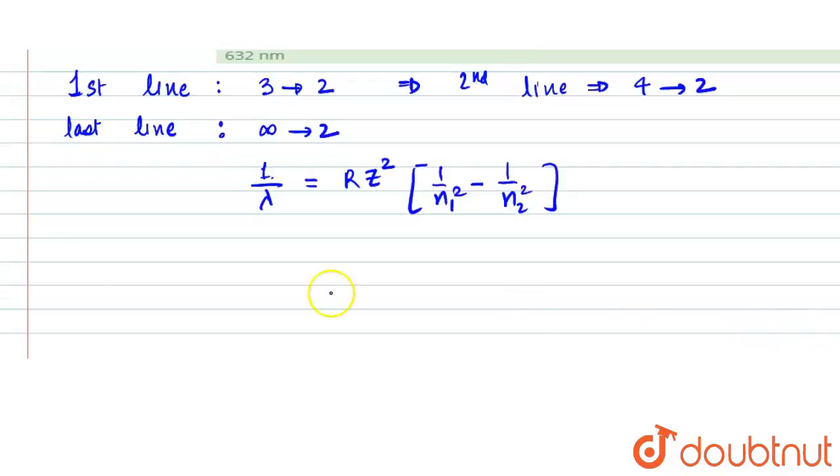During the first line of the Balmer series, the value of n₁ is 2 and n₂ value is 3, since the transition is happening from 3 to 2.